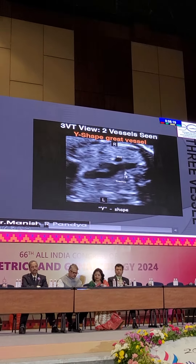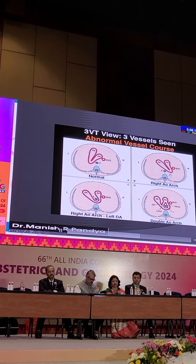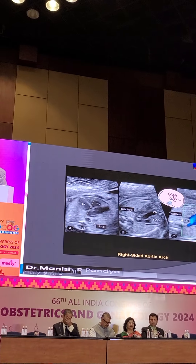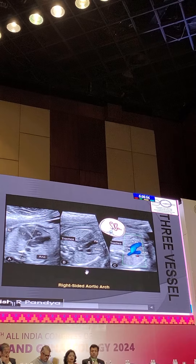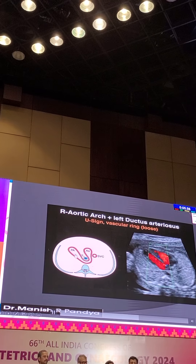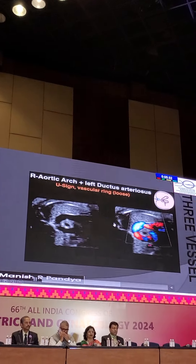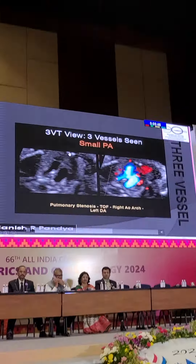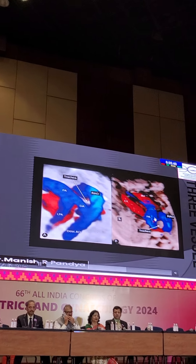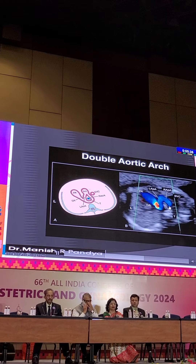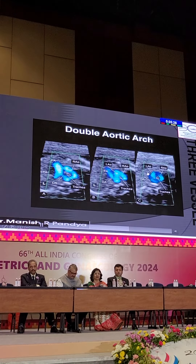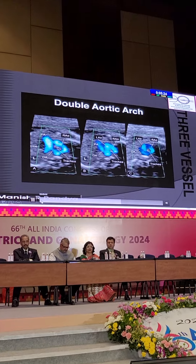In double outlet right ventricle, you can have a Y-shaped vessel rather than the normal pulmonary, aorta and superior vena cava. Anomalies such as right aortic arch with left ductus arteriosus can also be identified here. For right aortic arch, you look at the level of the trachea — trachea is the denominator. If trachea is lying outside the arch, you have a right-sided aortic arch. If trachea is lying in between, you have a right aortic arch with double ductus arteriosus — a loose vascular ring. In double aortic arch, trachea is the denominator lying in between left and right arches, forming a complete vascular ring.